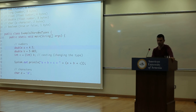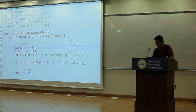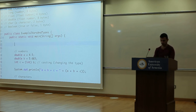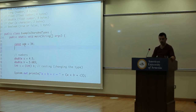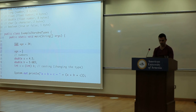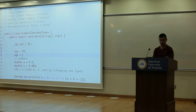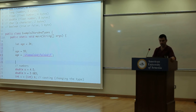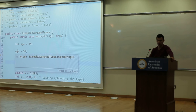Here's our next program. We have a main function, and the name of the class is the same as the name of the file. How did we create variables in JavaScript? We'd say 'const age = 34' or 'let age = 34', and let can be changed — age could be 55, or even a string. This is called dynamic typing: the type of the variable can change. When age is 34, it's a number; when you change it to a string, it's a string.